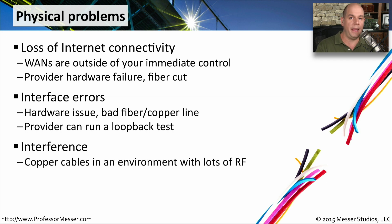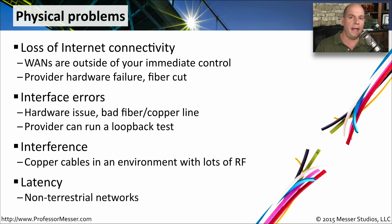If you're running copper cables to get to this wide area network, you can certainly have examples of interference, especially inside of a building where we have so much electrical equipment and other devices that can cause RF interference. And if you're communicating over a non-terrestrial link for your wide area network, that means you are leaving the Earth and going up to a satellite in space and being bounced back down again.